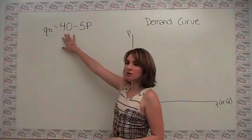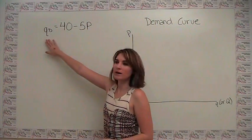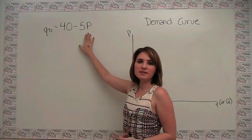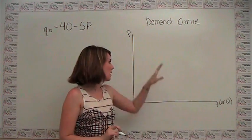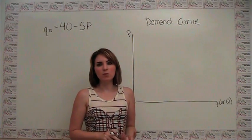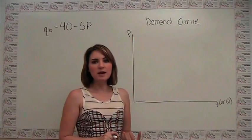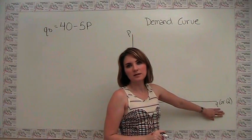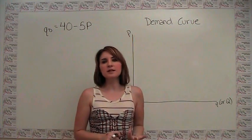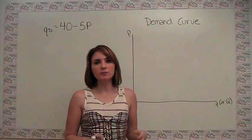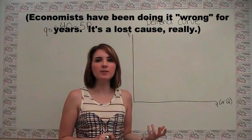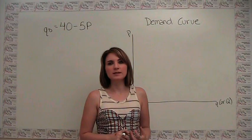So let's think about a demand curve represented by the equation quantity demanded is equal to 40 minus 5p. The first thing we want to do is say, well, how do we graph this on our axes here? You'll notice that the way that we wrote this demand curve is a little bit different from what you may have seen in your math classes, because we have the variable on the x-axis as a function of the variable on the y-axis. This is just a convention in economics, and it gets very frustrating sometimes, but it is what it is, and you can't really fight the trend at this point.